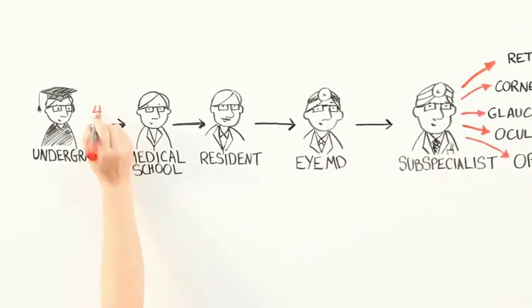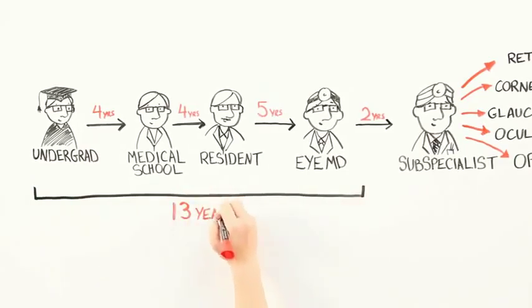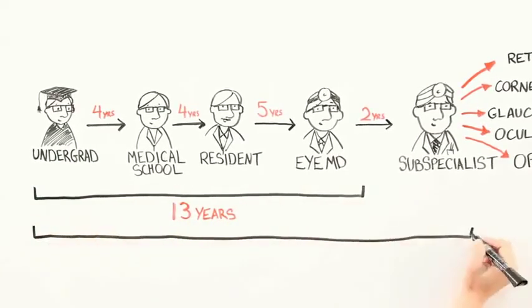As you can see, to become an ophthalmologist or an MD it takes a significant amount of time to become an expert. If you were counting, 13 years to become an ophthalmologist and 15 years to become a subspecialist.